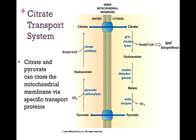Let's next look at the citrate transport system. In this system, citrate and pyruvate can cross the mitochondrial membrane through specific transport proteins, like the transport proteins we examined in Chapter 9. On the left of our figure, we can convert pyruvate to oxaloacetate, and of course oxaloacetate will feed into the citric acid cycle. To this, we add acetyl-CoA to form citrate.